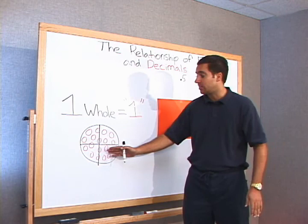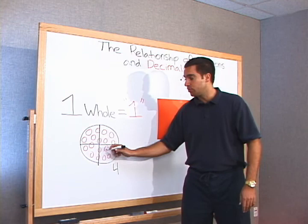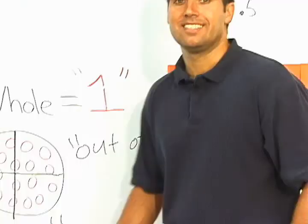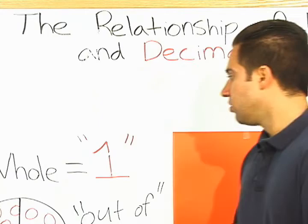So we've got four slices, one, two, three, four, out of four. I'm going to highlight this, out of, that's going to be a key word to our lesson today when we're dealing with fractions, out of.